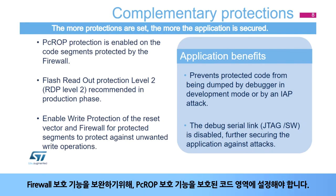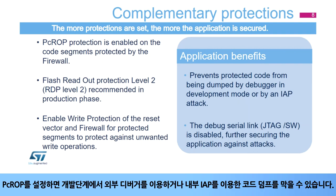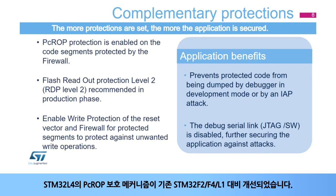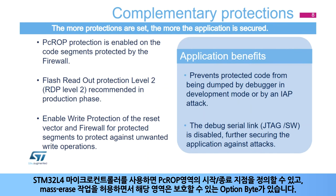Complementing the firewall protection, it is required to set the PCROP, or proprietary code readout protection, for the protected code segment in the flash memory. Setting the PCROP stops any code from being dumped by the debugger during the development phase, by external attacks, or from an IAP attack. The PCROP protection mechanism on the STM32L4 is improved over the previous STM32F2, F4, and L1 microcontrollers. STM32L4 microcontrollers make it possible to define start and end regions, and there is an option byte which allows a mass erase operation but keeps the PCROP segment protected.